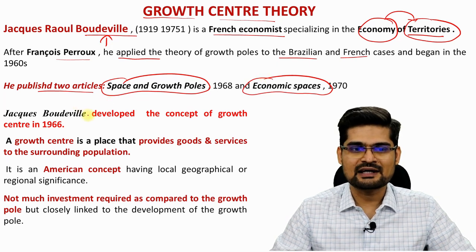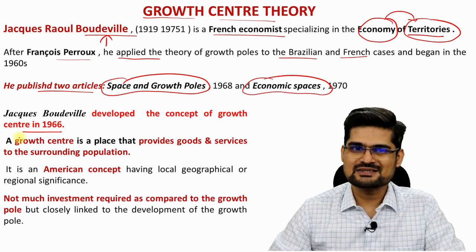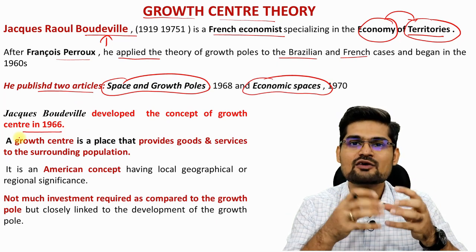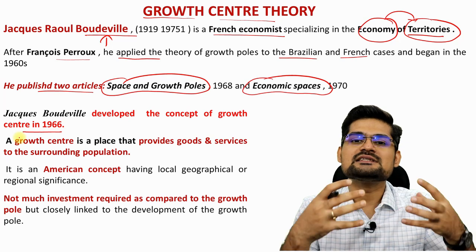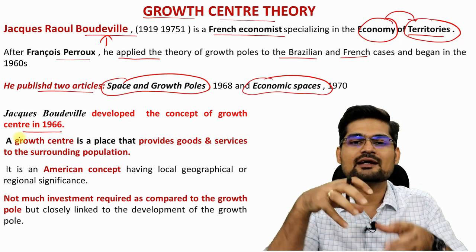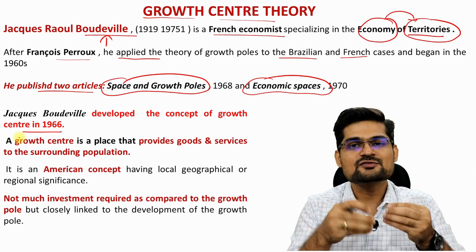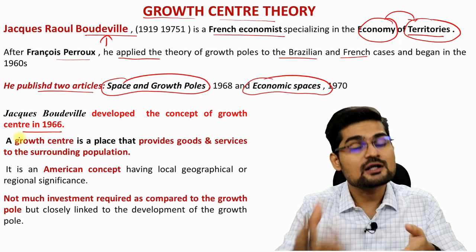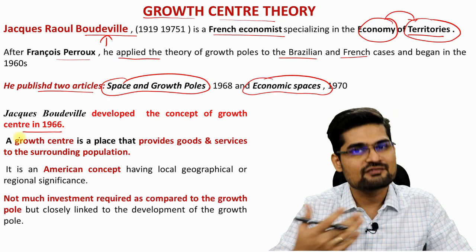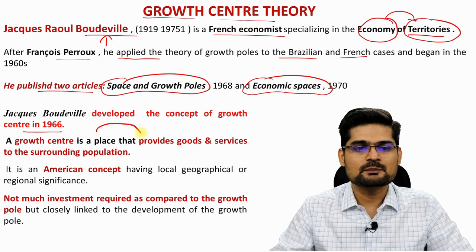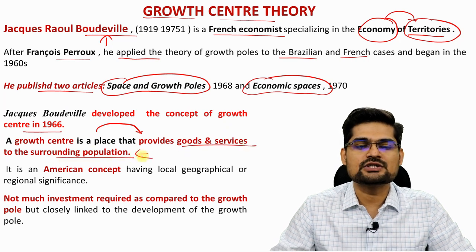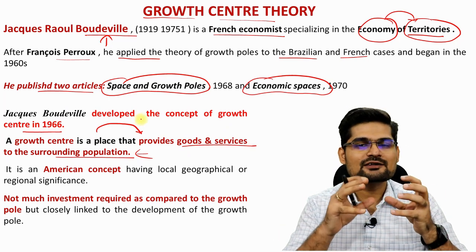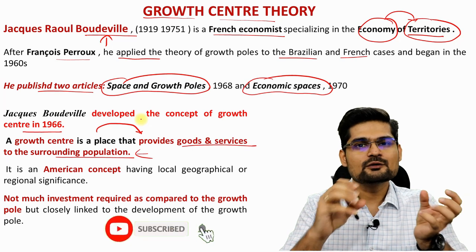In the 1960s, the concept of growth center developed, advocating that this centrism approach is not just in a propulsive firm or an abstract economic space, but has a hierarchy. It starts from a growth point, develops into a growth center, and then gradually may or may not become a growth pole depending on several factors. A growth center is basically a place that provides goods and services to the surrounding population. When we say goods and services, it links to central place theory — so you see the impact of central place theory as well, apart from Peru's work on growth pole.